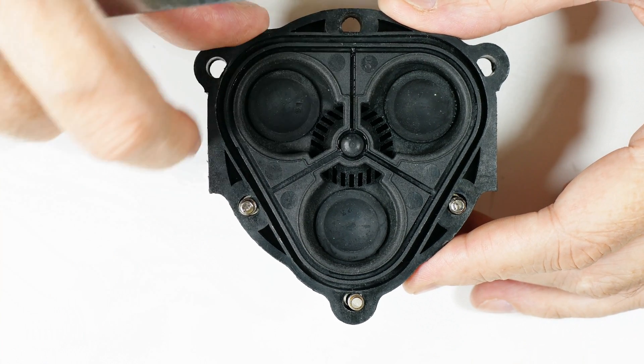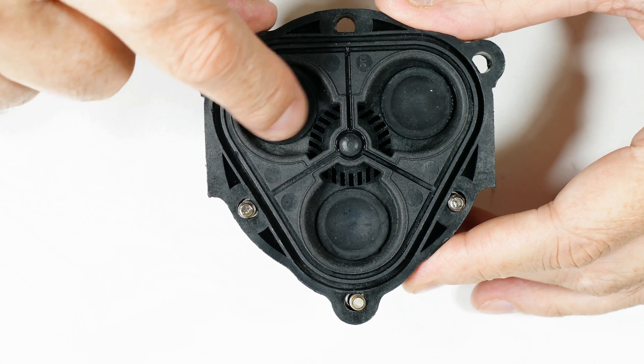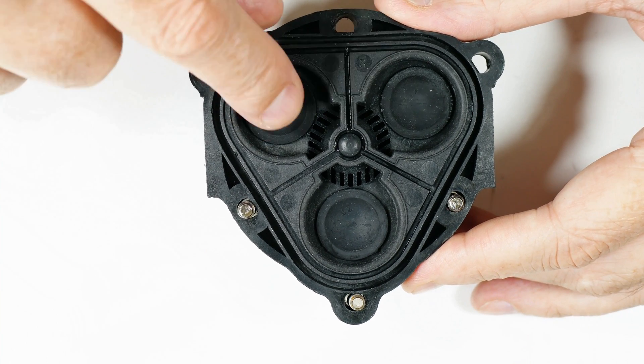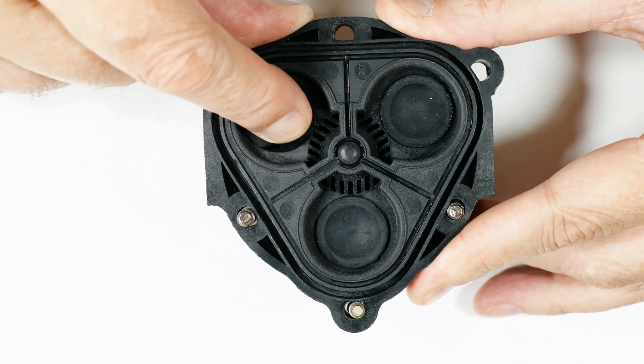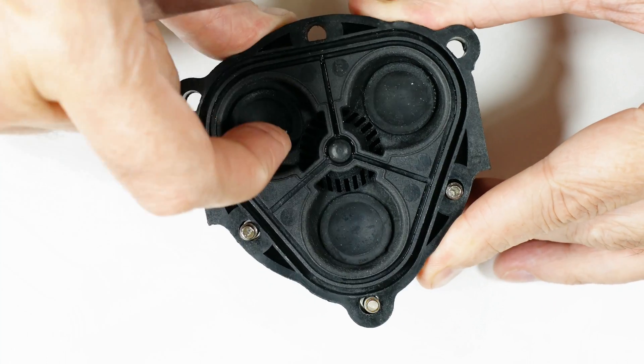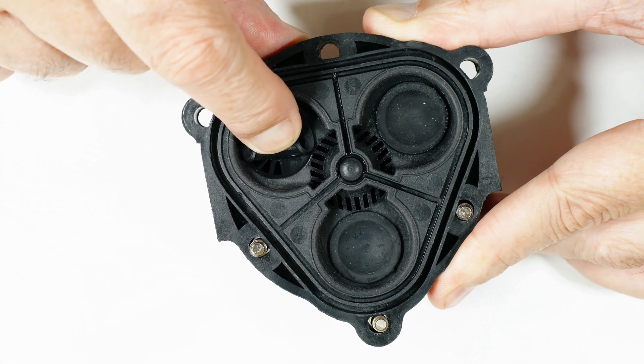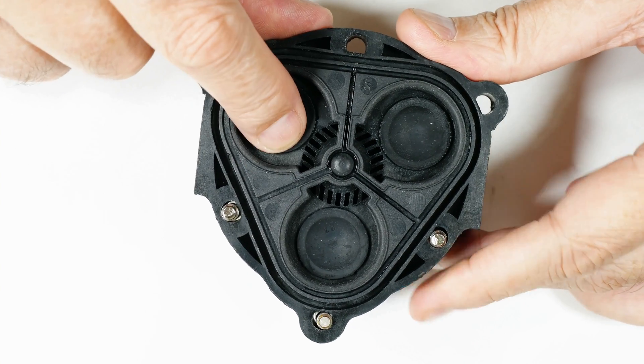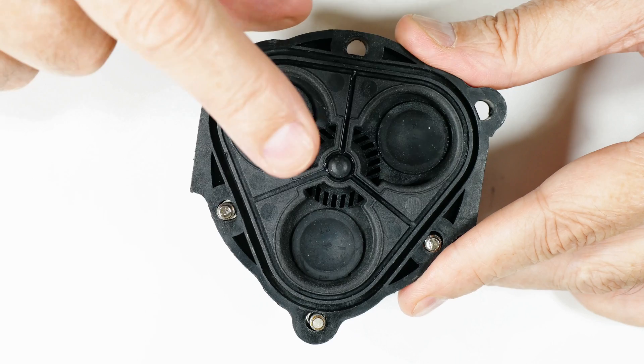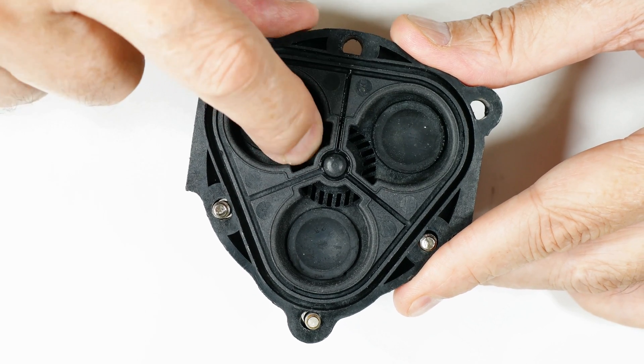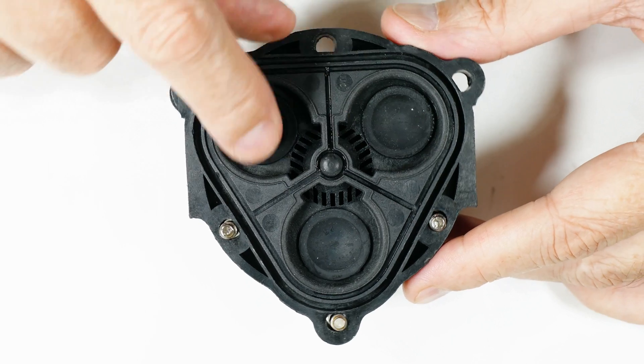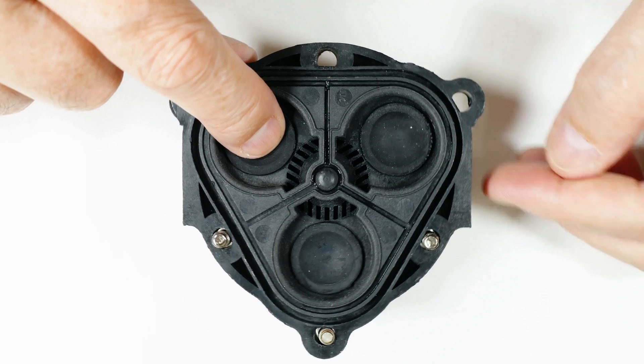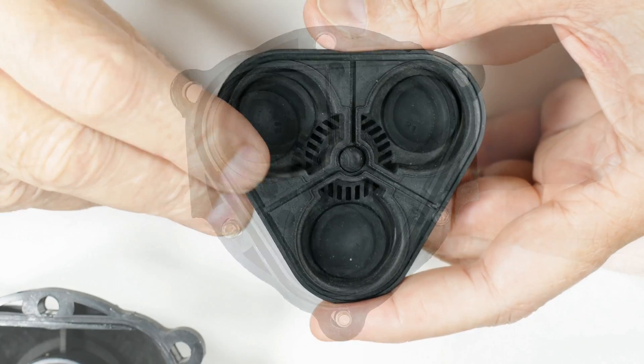When the piston goes down in one chamber it creates a slight vacuum, it pulls open this rubber valve which I don't know if you can see, pulls open that valve, exposes that inlet. Then when the piston comes up, it forces water down there, opening another rubber valve on the other side and then exhausting out of the port.